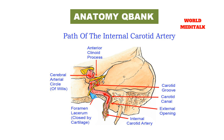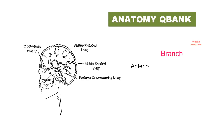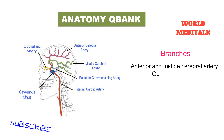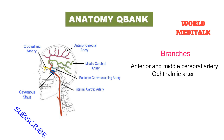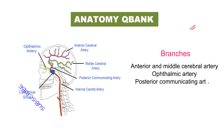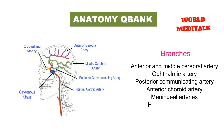Branches of the internal carotid artery include the anterior and middle cerebral arteries, ophthalmic artery, posterior communicating artery, anterior choroidal artery, meningeal arteries, and hypophyseal arteries.